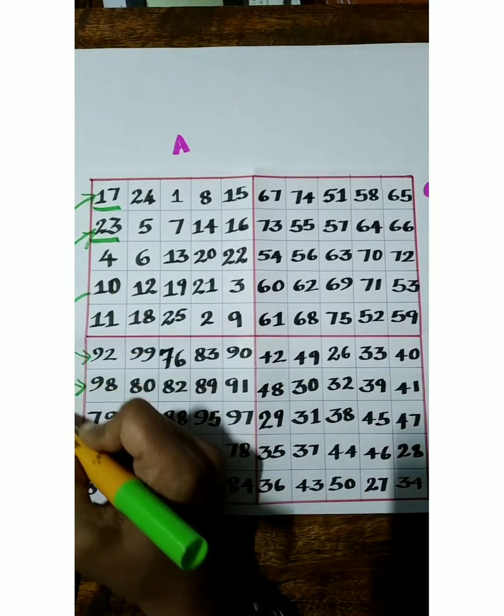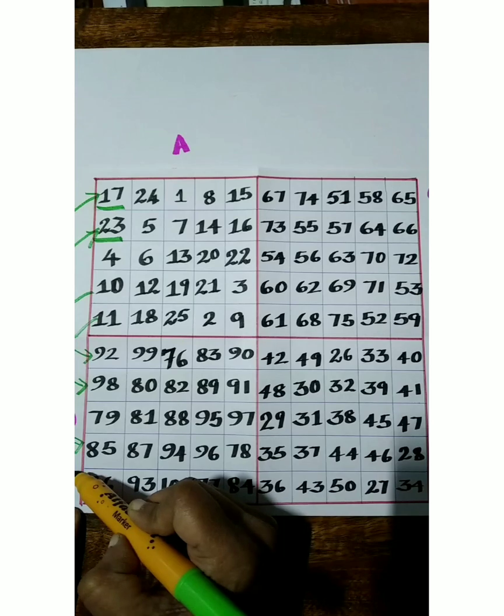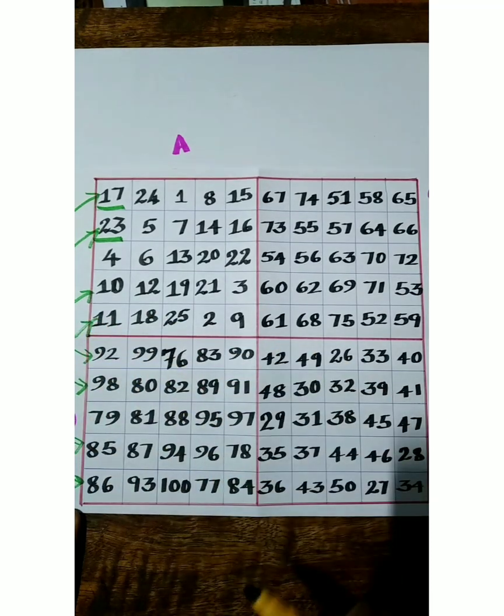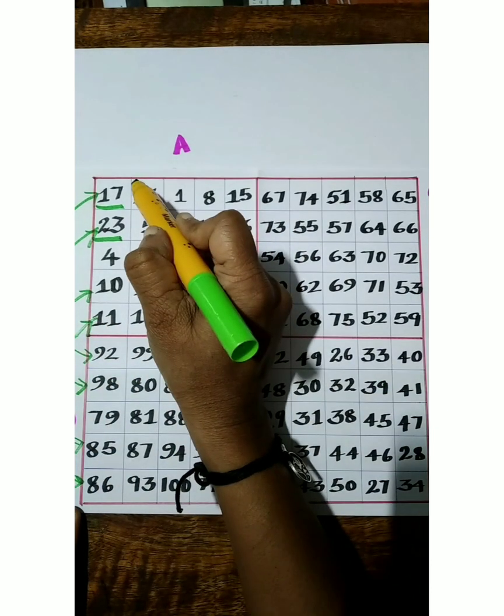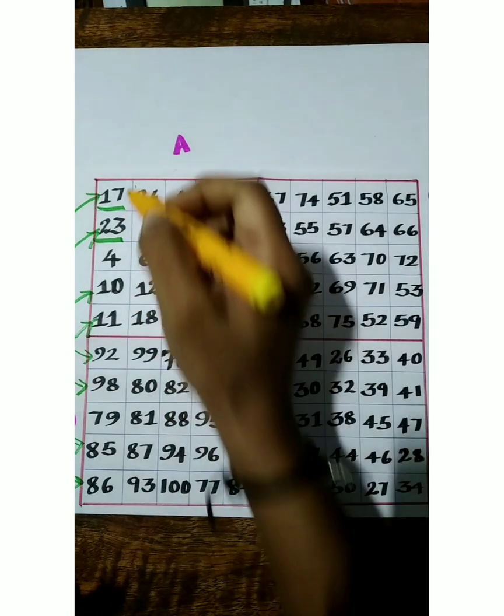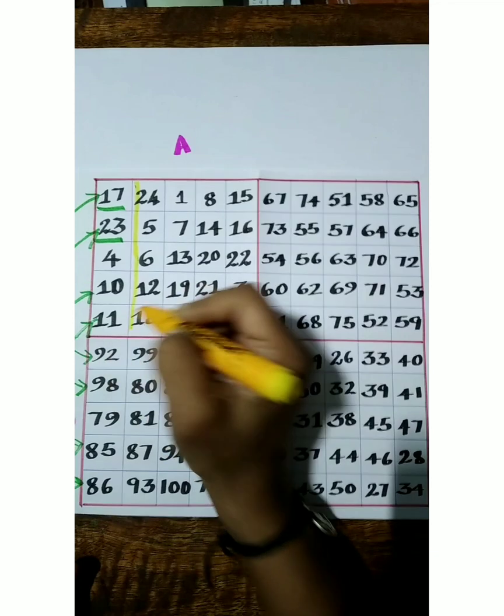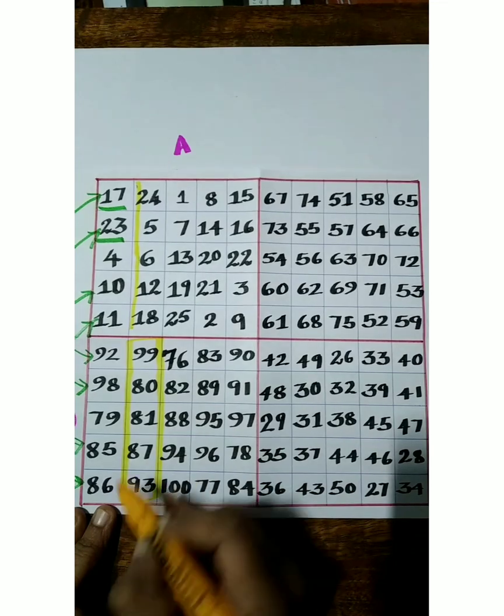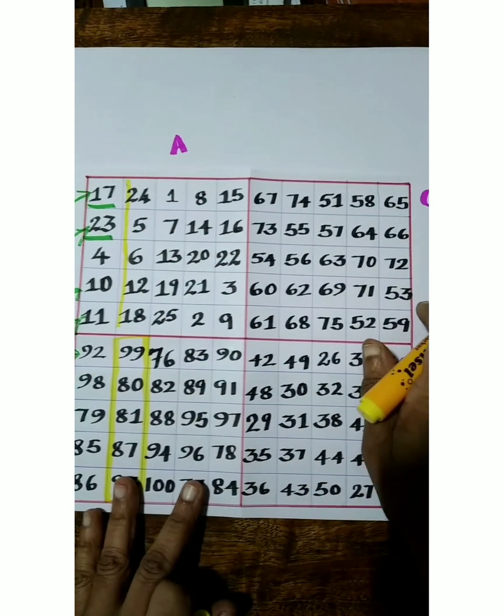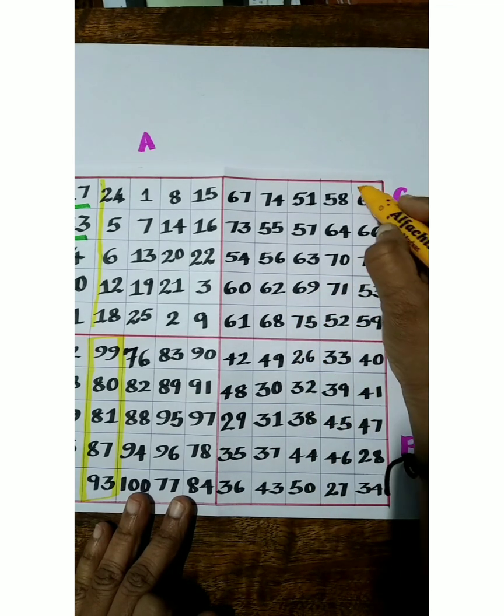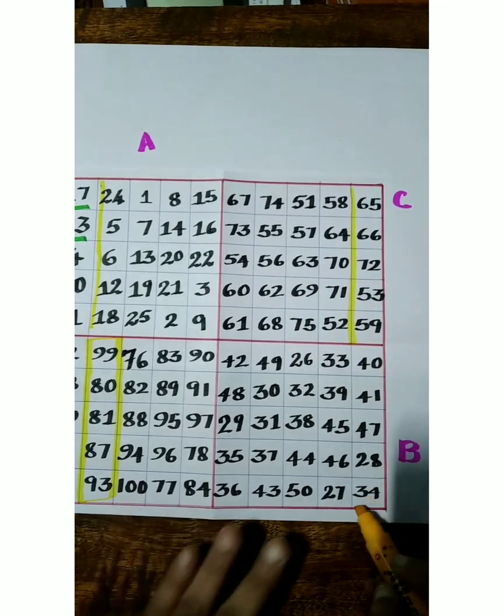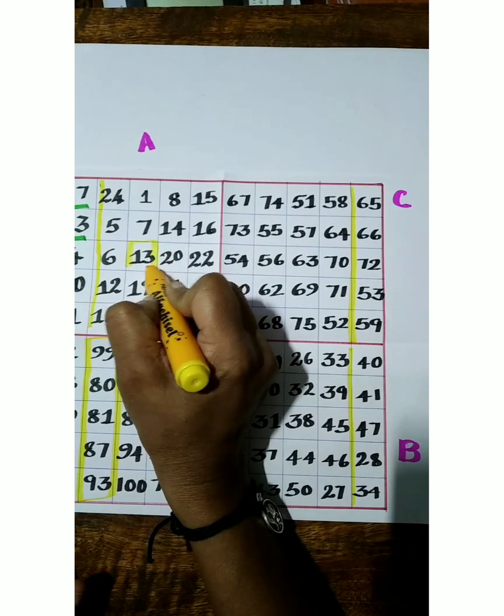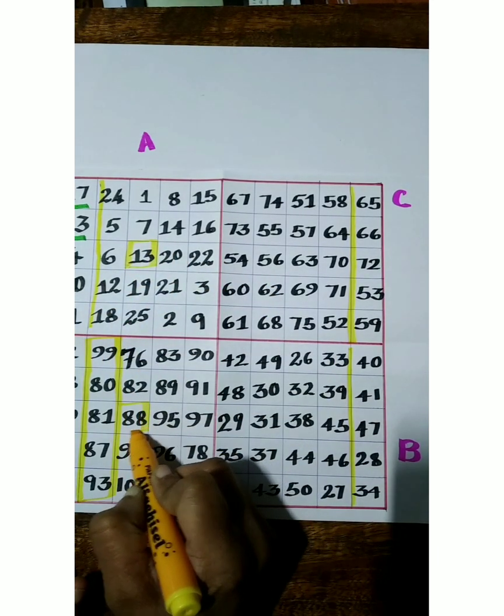So we can shift like this. And similarly, 85 will come to here and 86 here. And here complete this column. Complete this column we are shifting to down, and this column we are shifting to up. And here interchanging box 13 and 88.